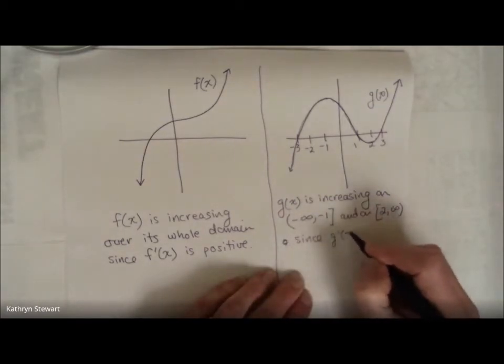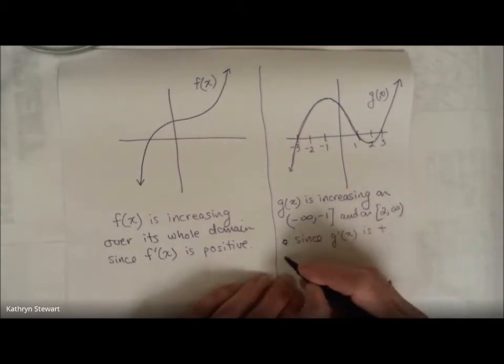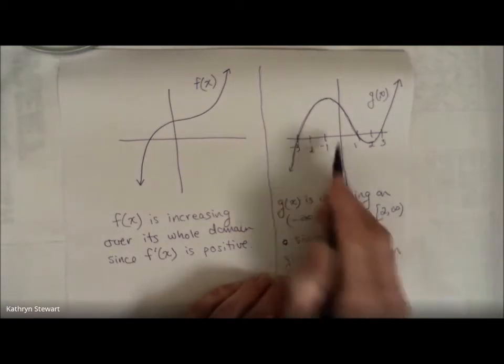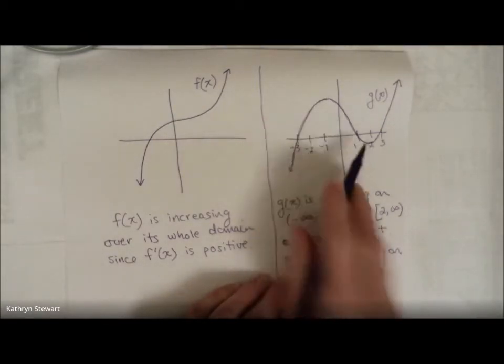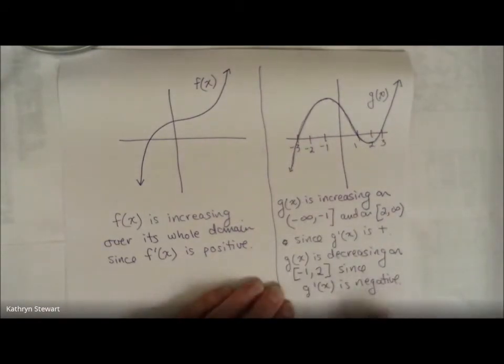Since g prime of x is positive, g of x is decreasing on, let's say from negative one to two, since g prime of x is negative.